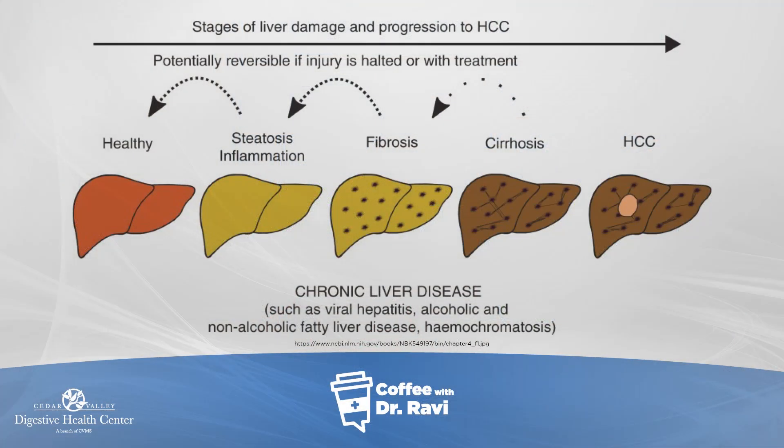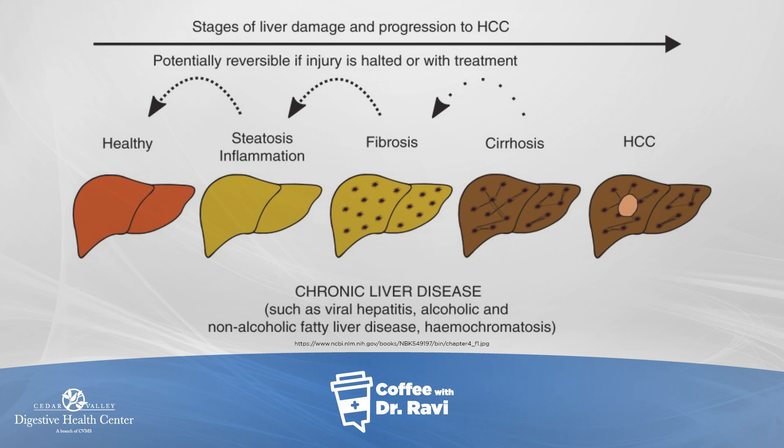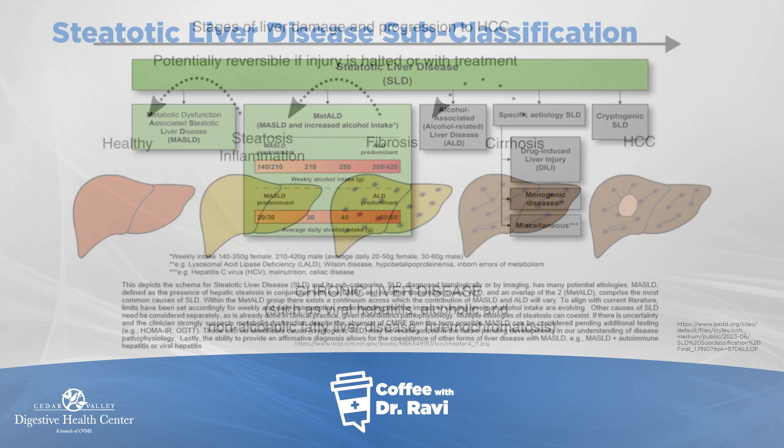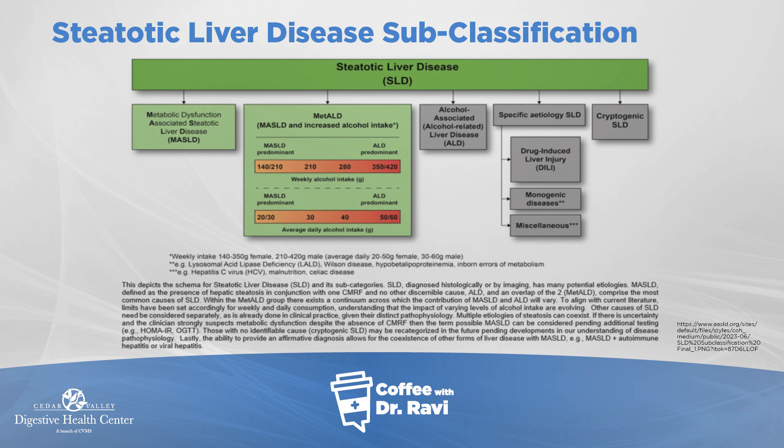The liver is an organ that sits right beneath the rib cage. As fat starts accumulating in it, it gets engorged. You can see the slide showing what a normal liver looks like, what a liver with fat looks like, and what a damaged liver looks like. The concern is that fat getting into the liver will cause scar tissue and damage. The latest guidelines have reclassified it, and that classification matters because it gets into the key drivers of fat in the liver.